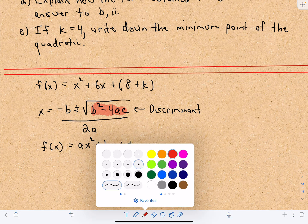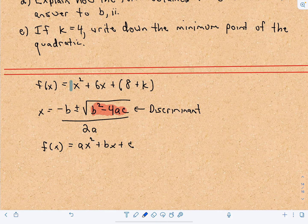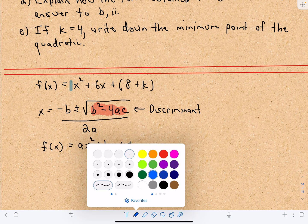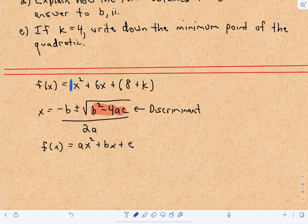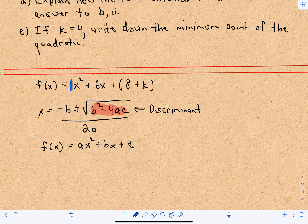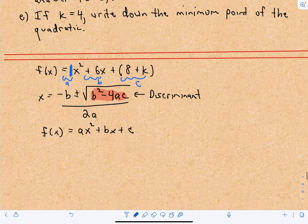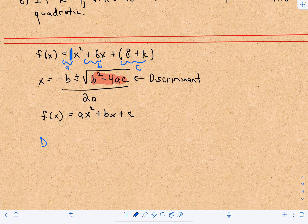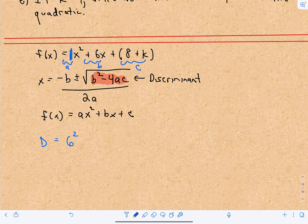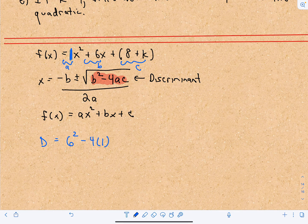So in this case, let's fill in some numbers here. There's no coefficient visible in front of the x squared, right? But that's just a 1, so that's going to be our a value. The positive 6 is going to be our b value. And then the 8 plus k is going to be our c value. So the discriminant is going to be b squared, so we said b is positive 6 minus 4 times a, which is 1, multiplied by c, which is 8 plus k.